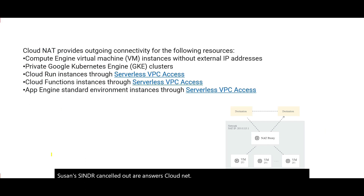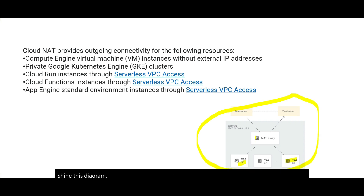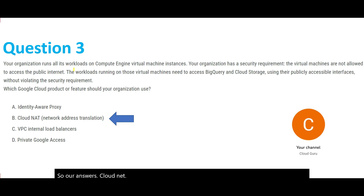To make answering questions easier, please go through the reference points provided. In short, Cloud NAT works great with virtual machines. In the diagram, you can see the two virtual machines with the NAT proxy and the destinations — BigQuery and Cloud Storage — as described in the question. Our answer is Cloud NAT. Keep in mind that whenever you get questions related to this type of scenario, the answer is probably Cloud NAT.